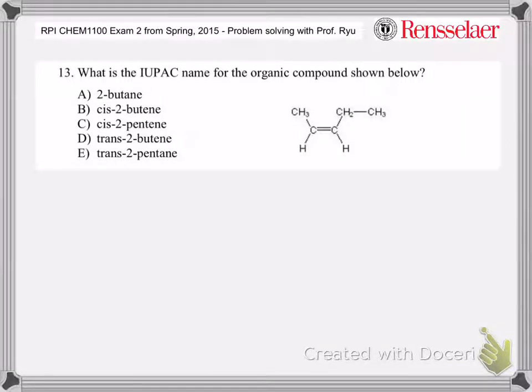This is another IUPAC nomenclature of organic compound. The first thing to notice is the functional group. There's a double bond and this is what we call an alkene.